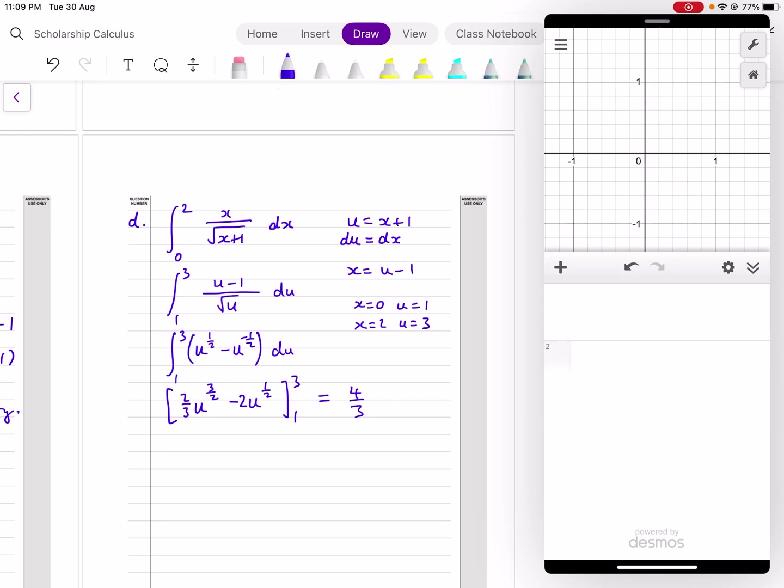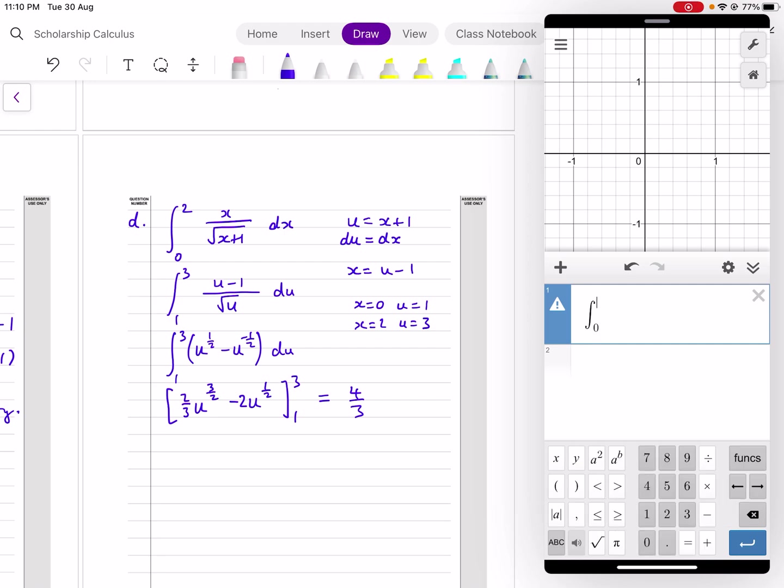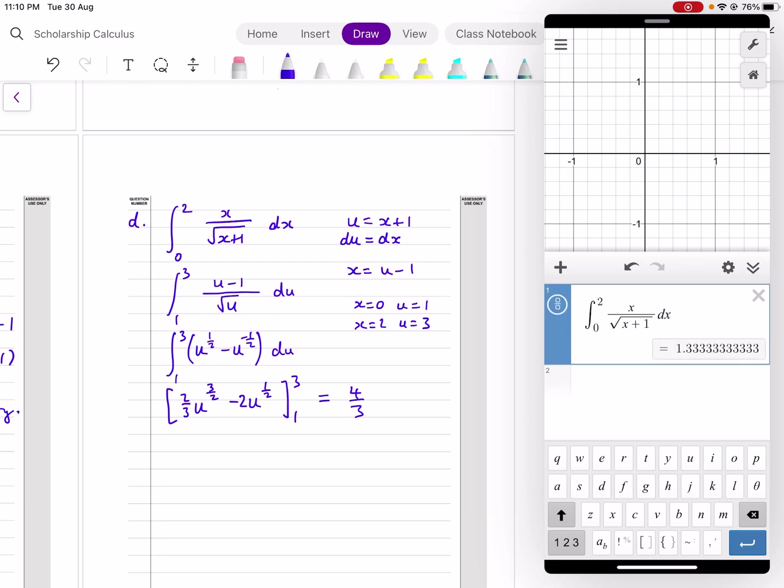And this is another one that your graphics calculator can do. I'll show you here on Desmos, but your graphics calculator can do definite integrals. I'll just type in int, integral between 0 and 2. If you don't know how to do it on your graphics calculator, just ask your teacher and I'll show you. x divided by square root x plus 1. dx to finish the job. That tells us 1.333, which is 4 thirds. Of course, you have to show the integration to get the marks in the scholarship exam, or even in your level 3 exam, but 4 thirds is the answer.